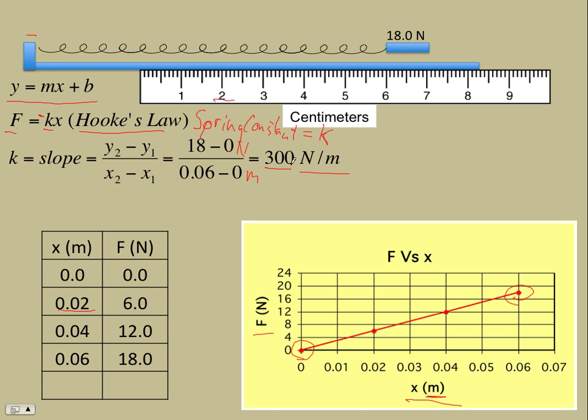The spring constant tells me how much force would be required to stretch the spring one meter, even though I doubt we could stretch this particular spring one meter. It would require a considerable amount of force there. Now we can write our equation for this particular spring as the force is 300x. So it's a linear spring, a spring that obeys Hooke's Law.